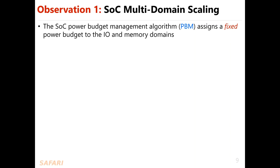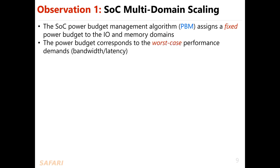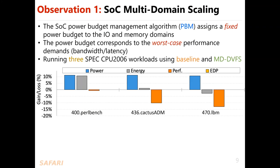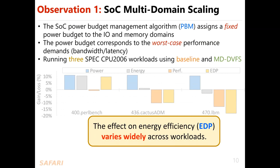Our first observation is about the importance of SoC multi-domain scaling. We observed that the SoC power budget management algorithm assigns a fixed power budget to the IO and the memory domain, corresponding to the worst-case performance demand. Running three SPEC CPU 2006 workloads using baseline and MD-DVFS setups, we observed that the power of the three workloads is reduced by 10%. The energy of the first workload was reduced by 10%, while for the other workloads it was decreased slightly or increased. The performance of the first workload was slightly degraded, while the other workloads experienced more than 10% performance degradation. The EDP of the first workload was improved by about 10%, while the other workloads experienced significant degradation in EDP. The effect on energy efficiency varies widely across workloads.